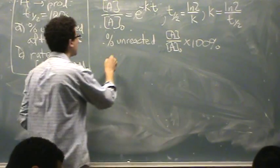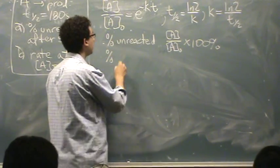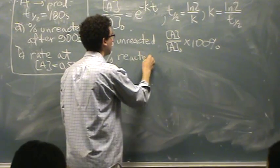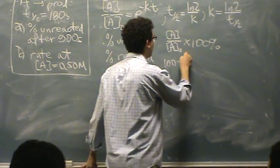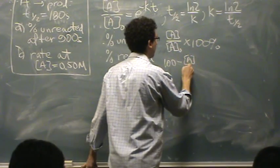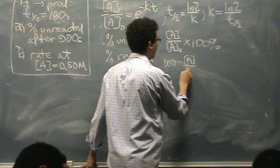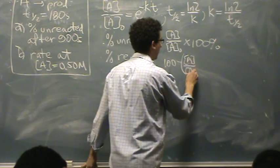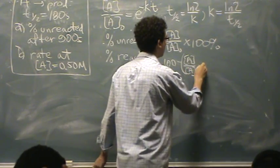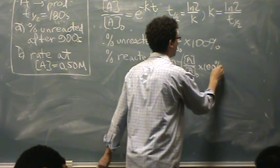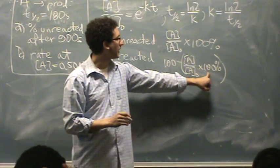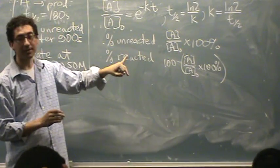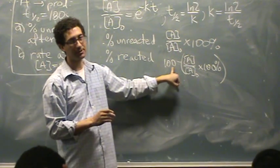If you want the percent, this problem doesn't want it, but if you wanted the percent reacted, very similar, it would be 100 minus [A] over [A₀] times 100. So if you wanted the percent unreacted, first you multiply by 100 to get the percent unreacted, and then you subtract it from 100%.